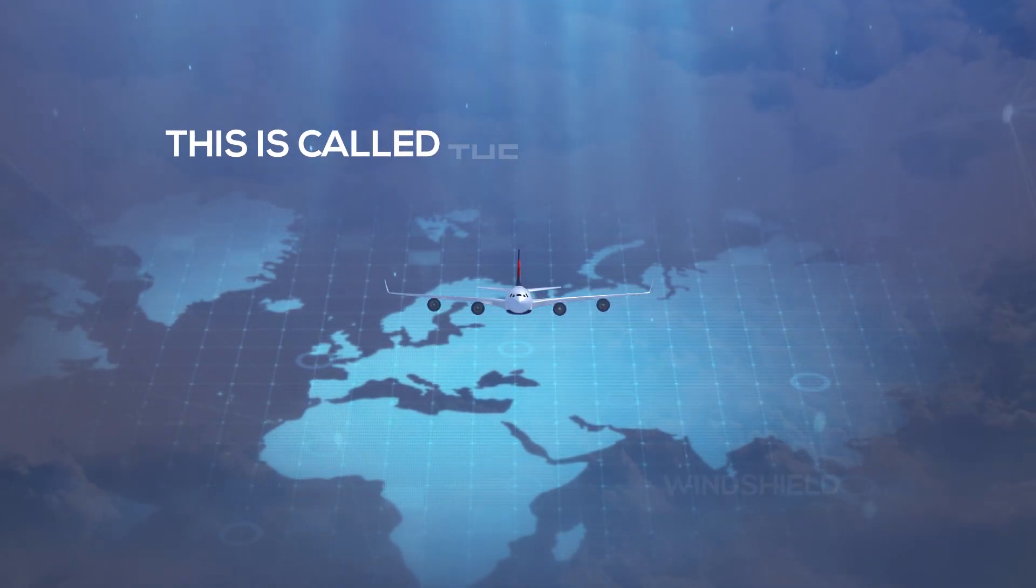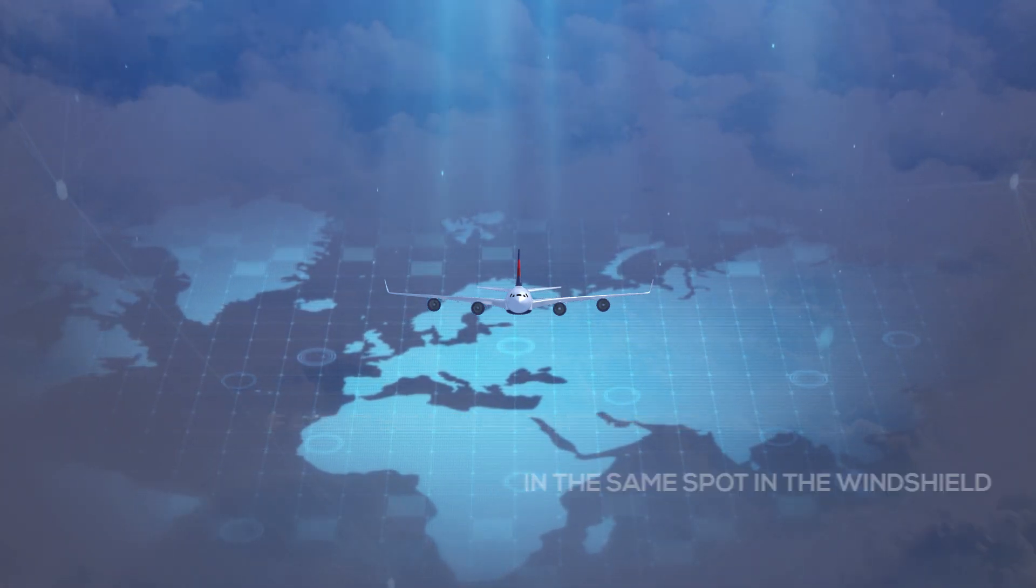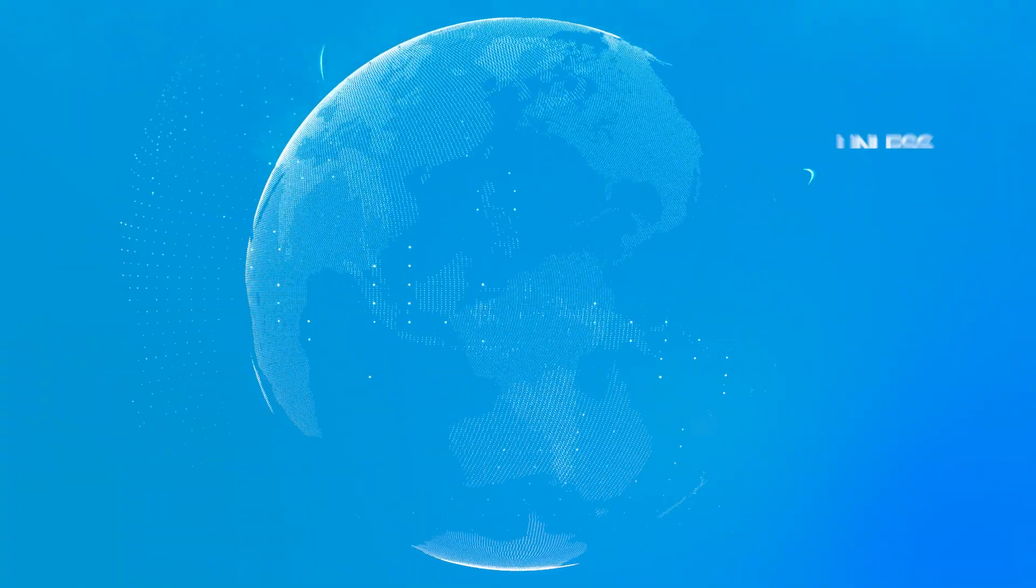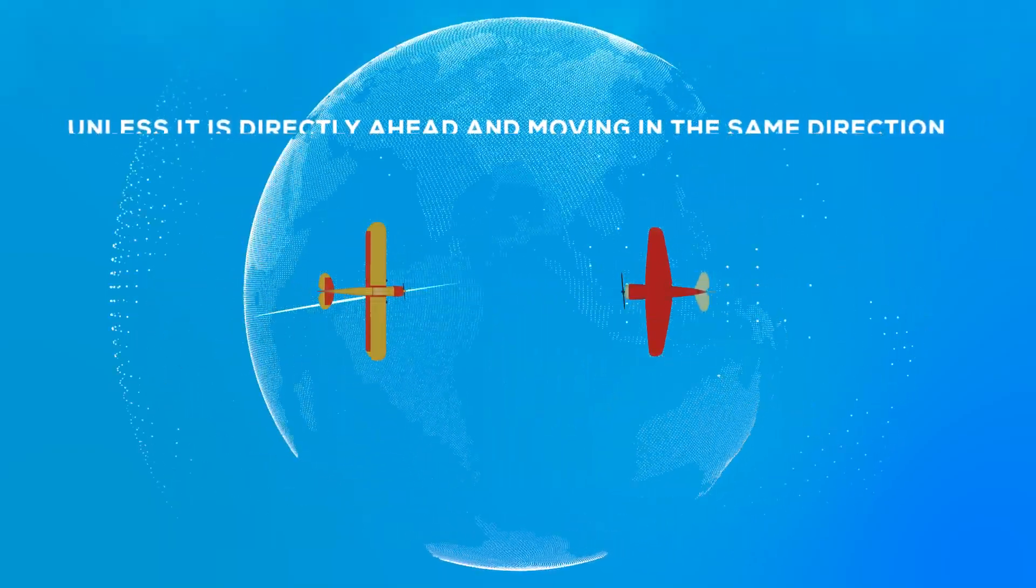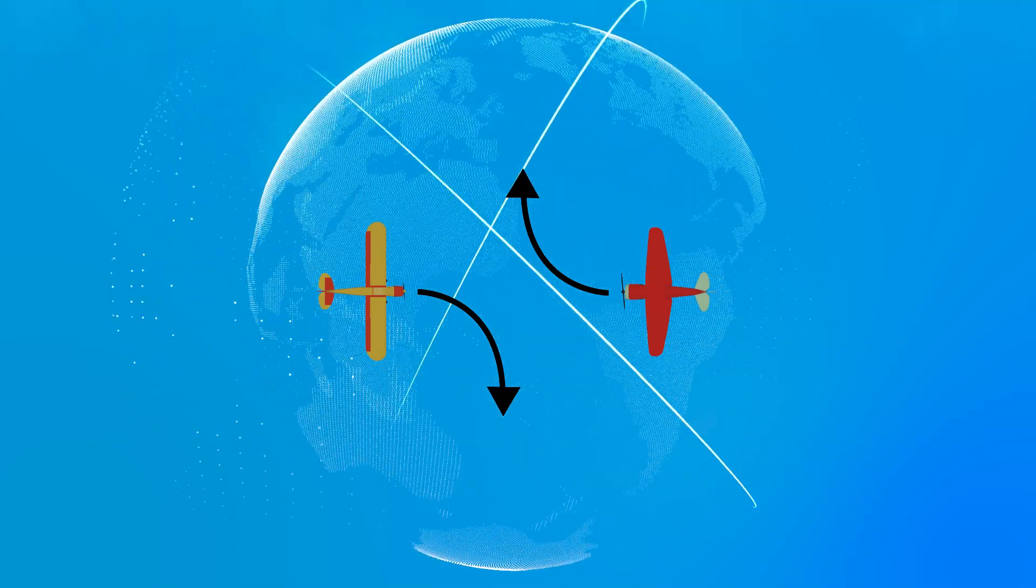This is called the blossom effect. If a pilot sees an aircraft that remains in the same spot in the windshield, unless it is directly ahead and moving in the same direction, there is a high probability the two aircraft will collide unless one changes their course.